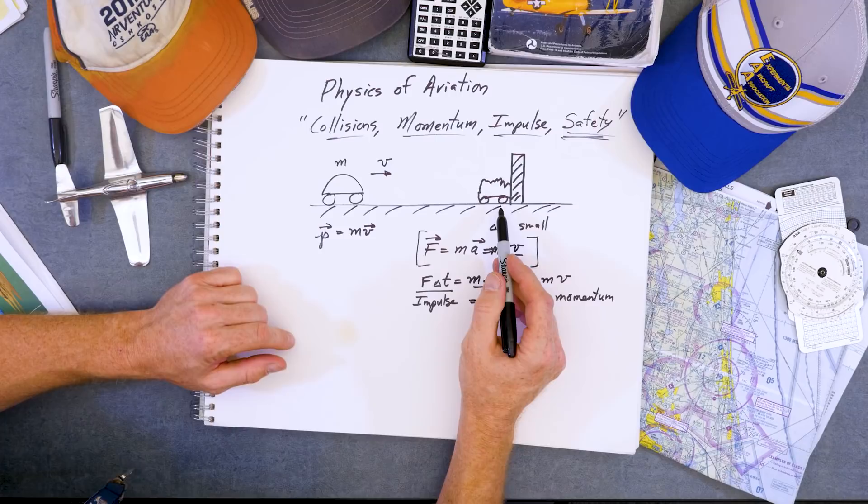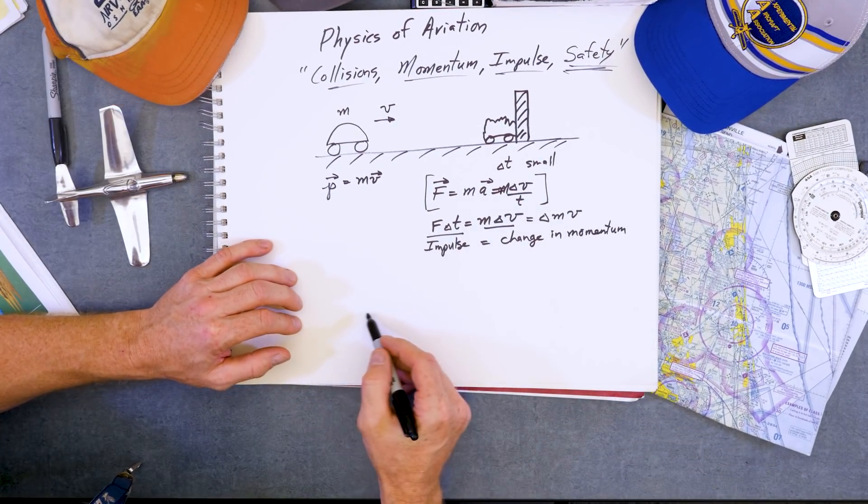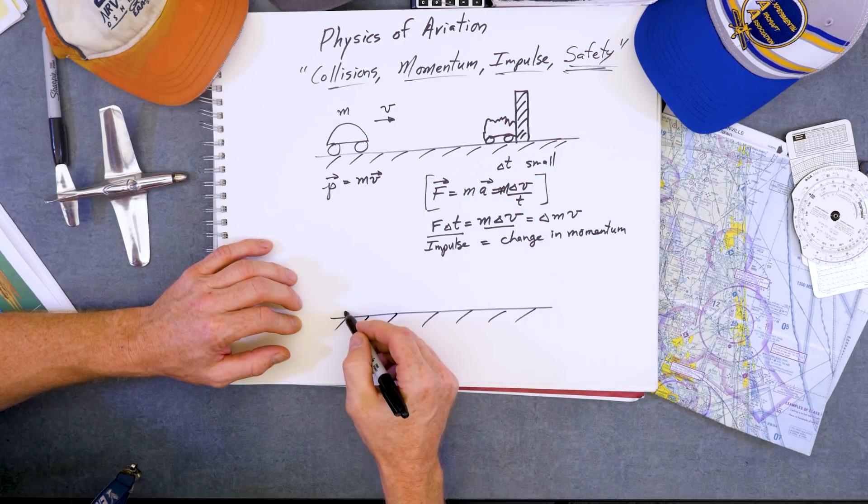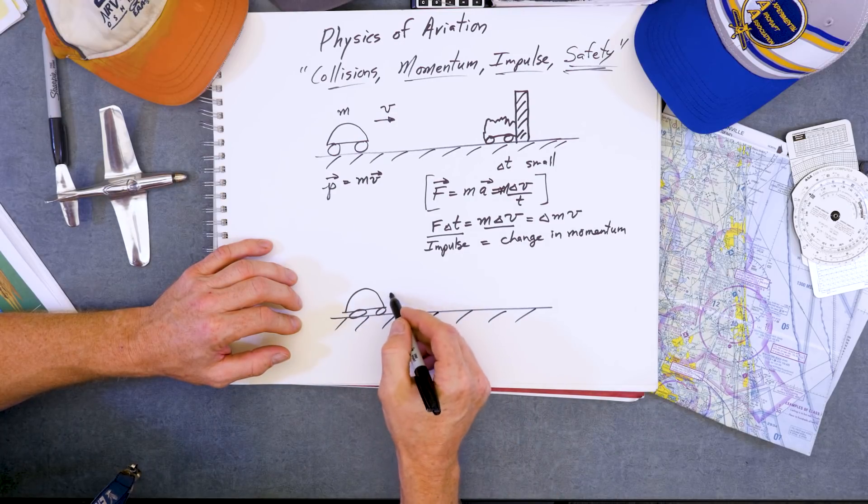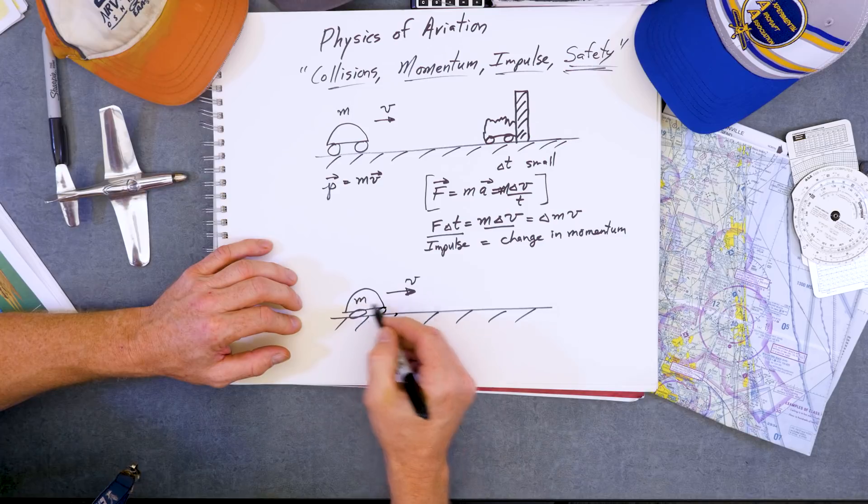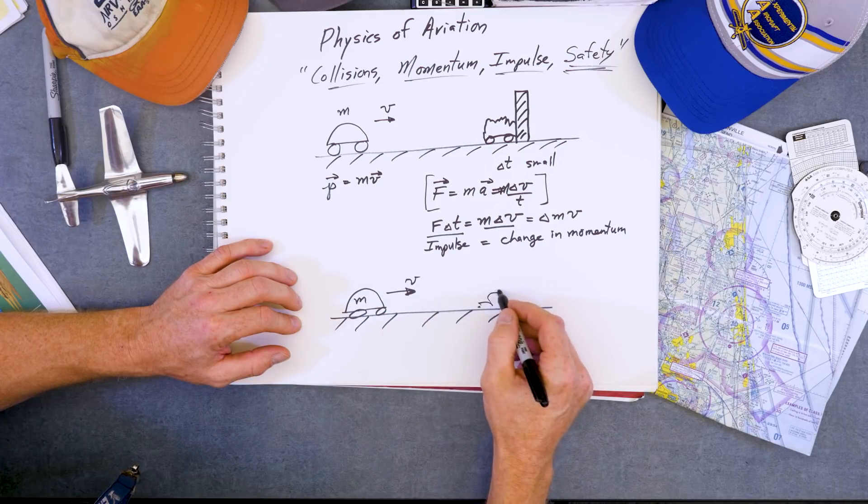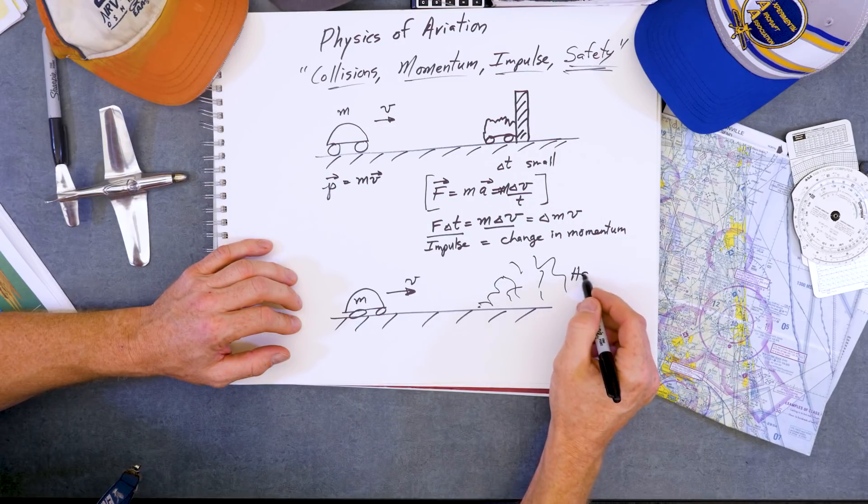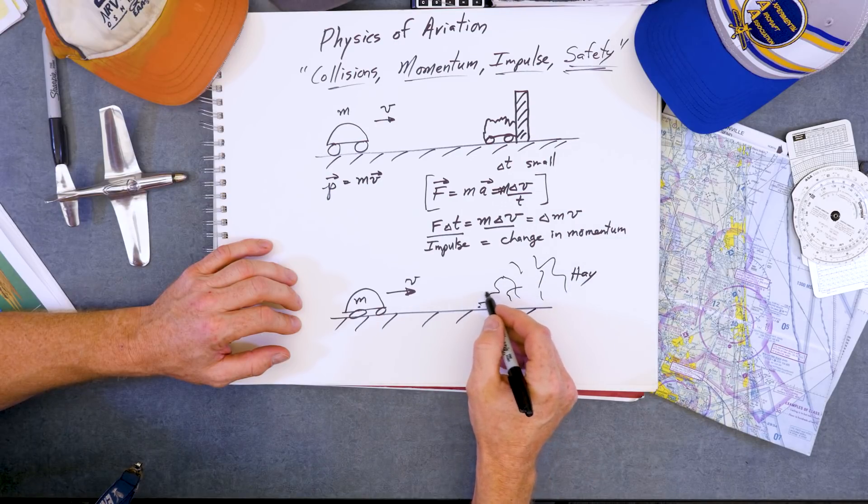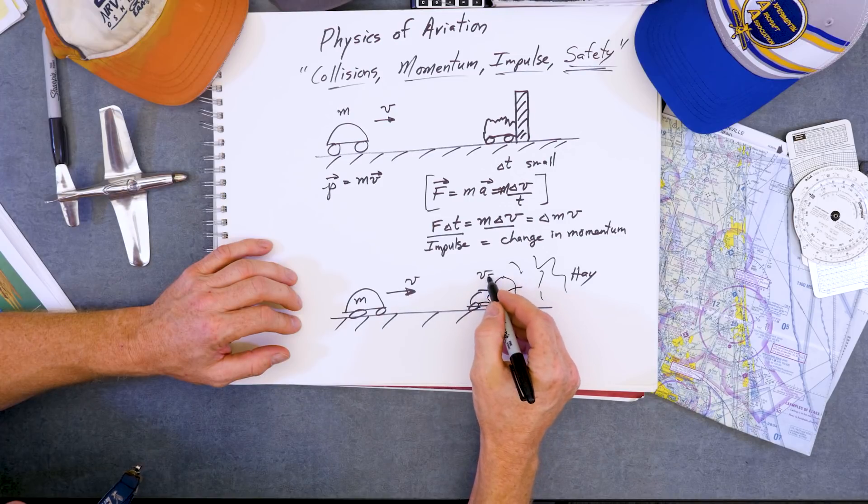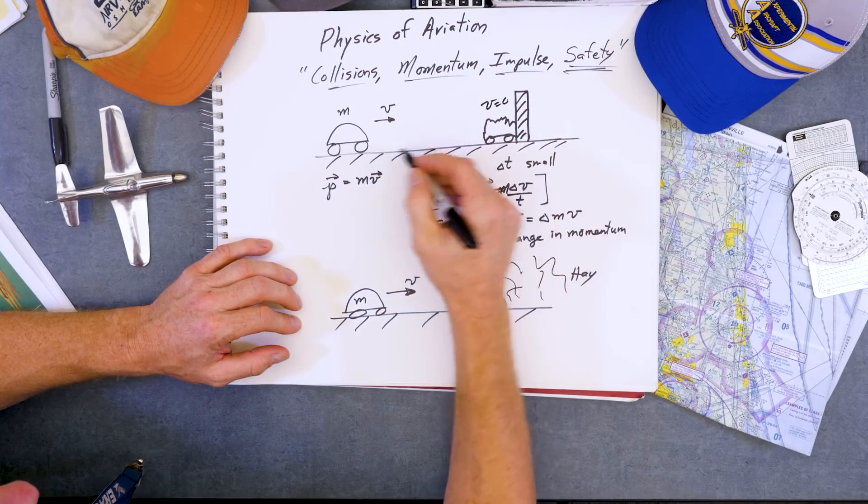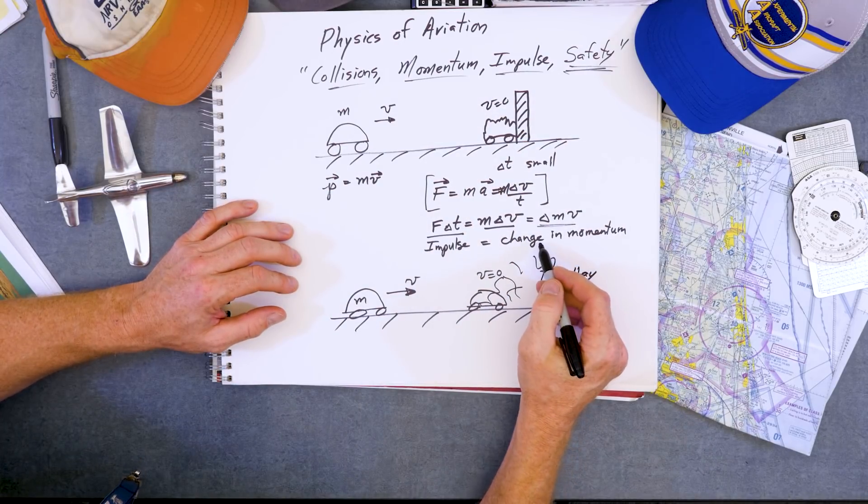Okay, so what do we want to compare now? Now we compare the same VW bug traveling at the same speed V, but now the driver goes for a stack of hay. And the driver still comes to rest. So we're going from momentum MV to momentum zero in both cases. So the change in momentum is the same in both cases. Therefore, the total impulse must be the same.